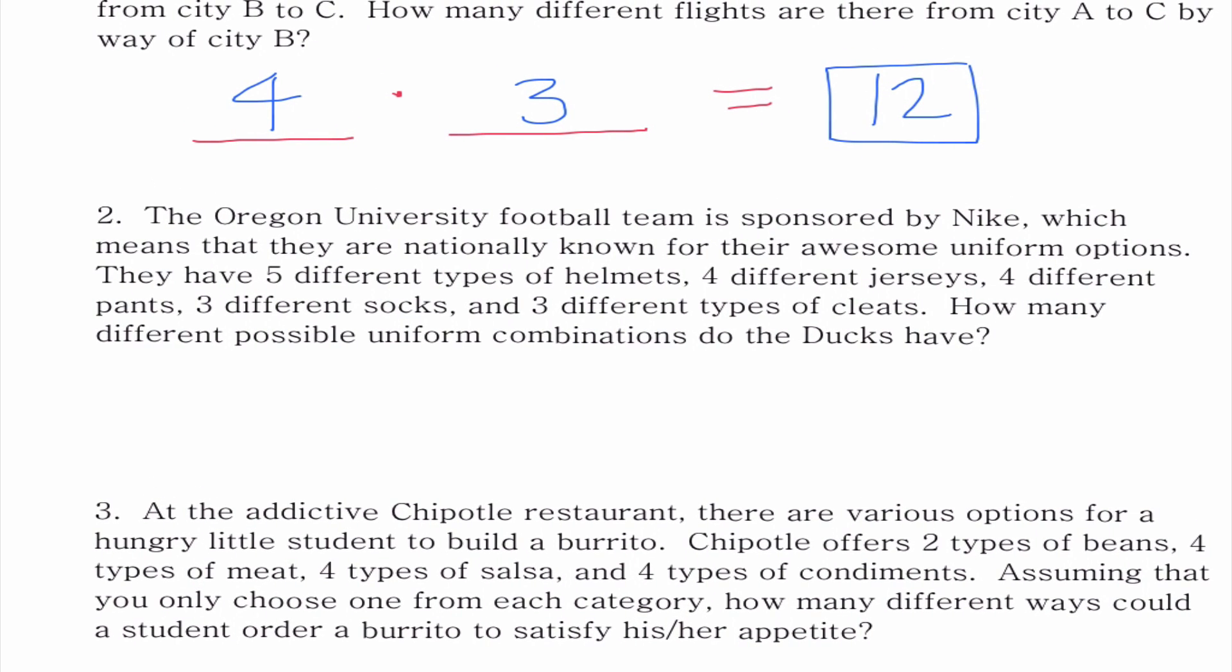Number two. The Oregon State University football team is sponsored by Nike, which means that they are nationally known for their awesome uniform options. They have five different types of helmets, four different jerseys, four different pants, three different socks, and three different types of cleats. How many different possible uniform combinations do the Ducks have? You guys can do this with your own wardrobe as well. If you're trying to figure out how many cool Lancer outfits can you put together for Friday spirit days, you can take the number of your tops times the number of the types of pants you're going to wear, and it's going to be the fundamental theorem.